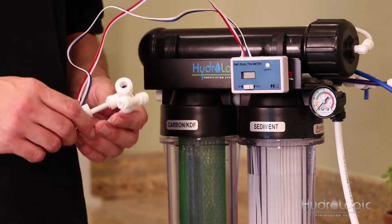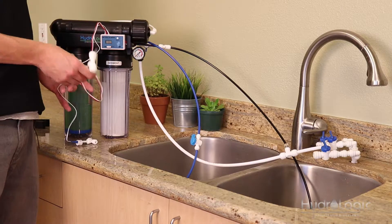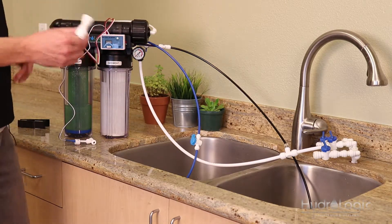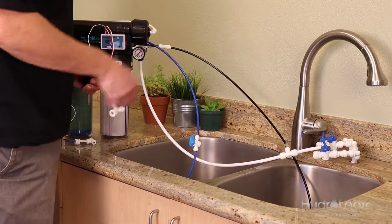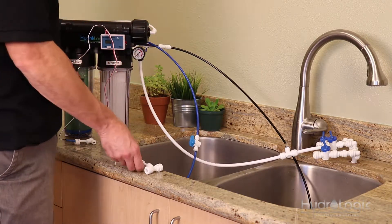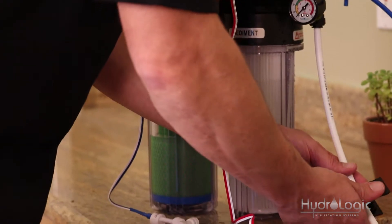Now install your T-sensors. The in, again, is for your feed water on your stealth. So anywhere on this 3 eighths white line between your stealth and your source water, you can install this sensor. I'll just go ahead and make a cut right here.